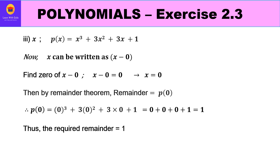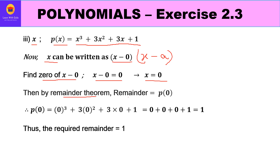In the third part, the divisor is x, which can be written as x − 0, since we need a linear polynomial in the form x − a. Finding the zero of x − 0 gives x = 0. By the Remainder Theorem, the remainder equals the value of the polynomial at x = 0: 0³ + 3(0²) + 3(0) + 1 = 0 + 0 + 0 + 1 = 1. So the remainder is 1.